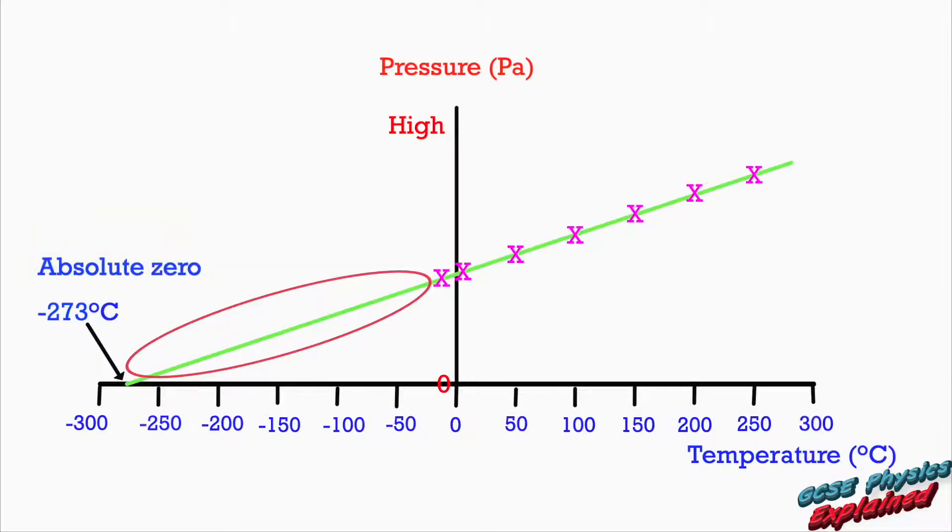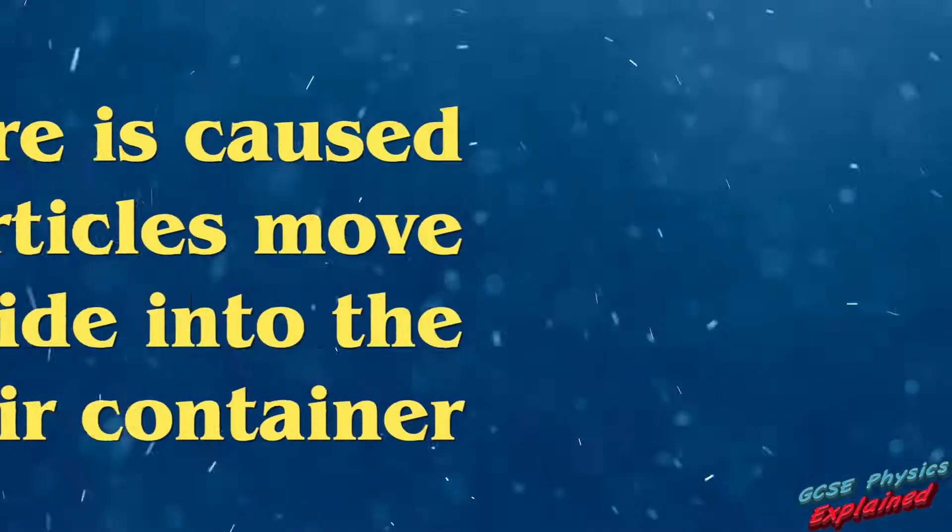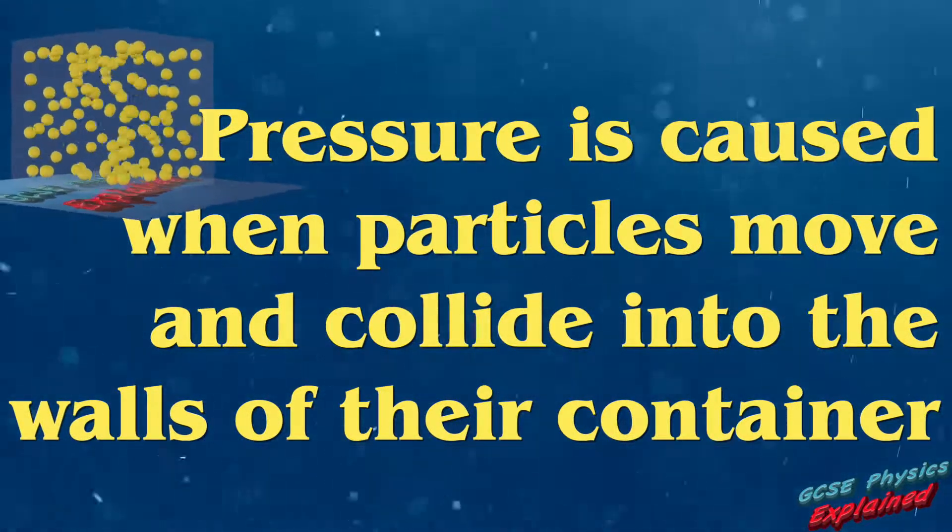Absolute zero. And he proposed it's the coldest temperature in the universe and you can get no colder. At this temperature, all particles have just about zero kinetic energy and just about no movement. And that's why there's just about zero pressure, because pressure is caused when particles move and collide into the walls of their container.